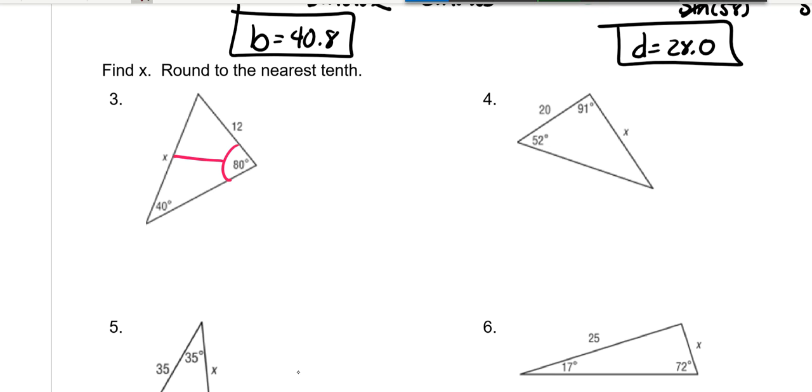Then this one, we have 80 goes with the X. So sine of 80 with X on top. And then this 40 goes with this 12. So sine of 40 with 12 on top. And then you cross multiply.